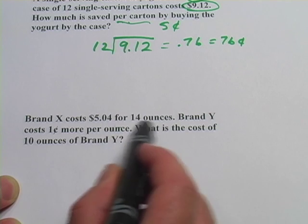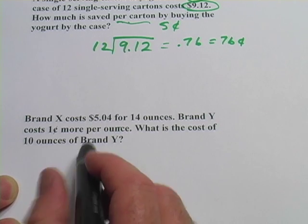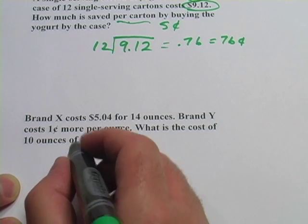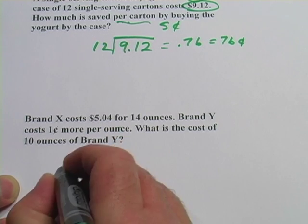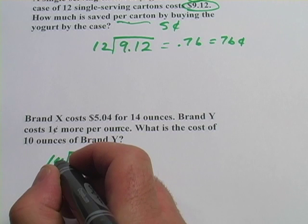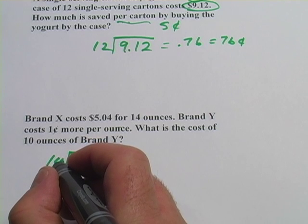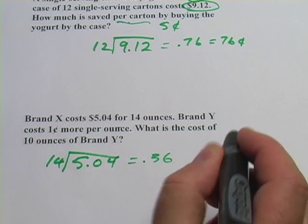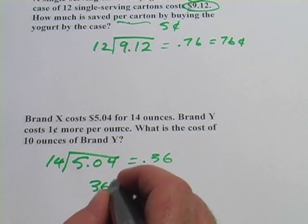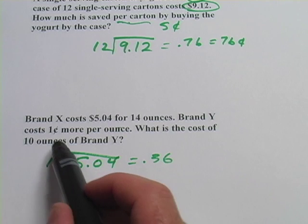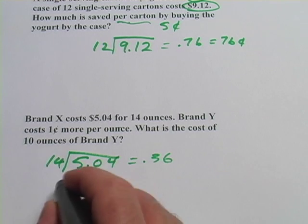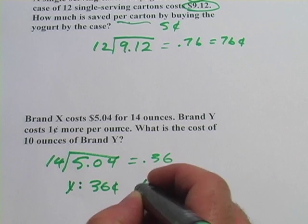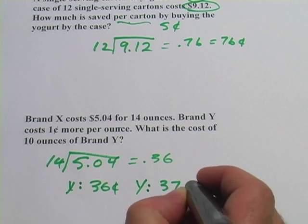Let's start by figuring out the per ounce cost of brand X. 5.04 for 14 ounces, so we have to take 5.04 and divide it by 14. So 5.04 divided by 14, and I get .36 dollars, so 36 cents. Now it says brand Y costs 1 cent more per ounce, so this is X. Y is 37 cents per ounce.